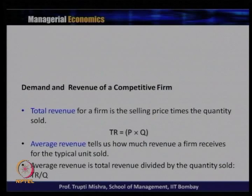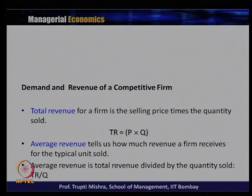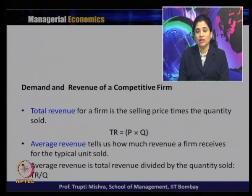Now we will talk about demand and revenue of a competitive firm — as an industry as a whole and for an individual firm. Total revenue for a firm is selling price times the quantity of goods sold: TR = P × Q. If price is 10 rupees and quantity sold is 100 units, total revenue will be 1000.